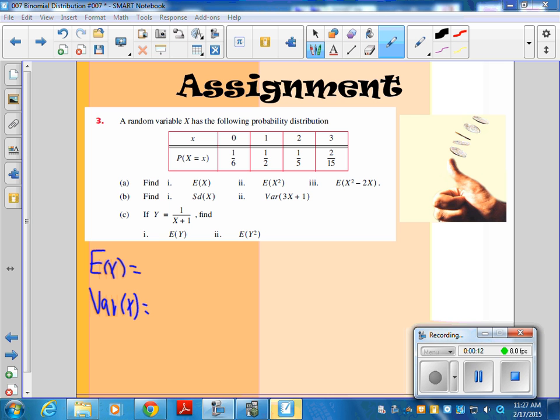And the expected value is just the sum of all of the x's times the probability of x. And you just add all those up. Now, what's interesting, what you do for the variance is it's the E of x squared minus E of x quantity squared.